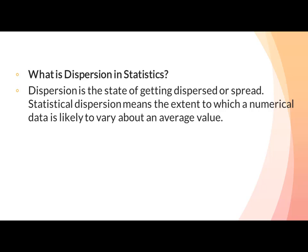Statistical dispersion کا مطلب یہ ہے کہ ایک data جو ہے average value سے کتنی dissimilarity show کرتا ہے — یعنی average value اور جو data ہم نے لیا ہوا ہے اس کے بیچ میں کتنا فرق ہے، کتنا average value سے وہ vary کرتا ہے۔